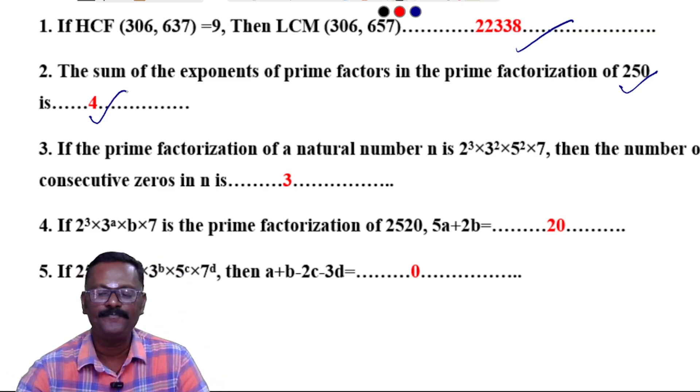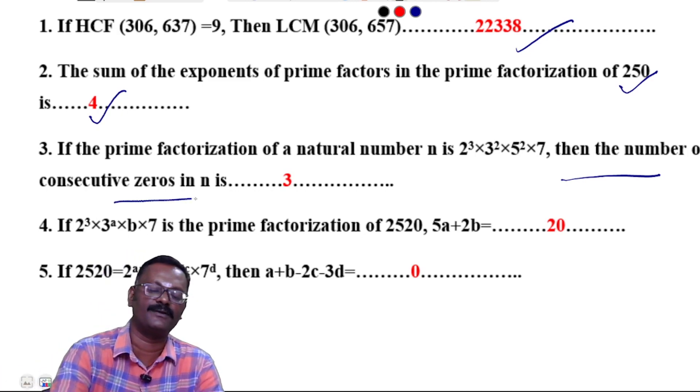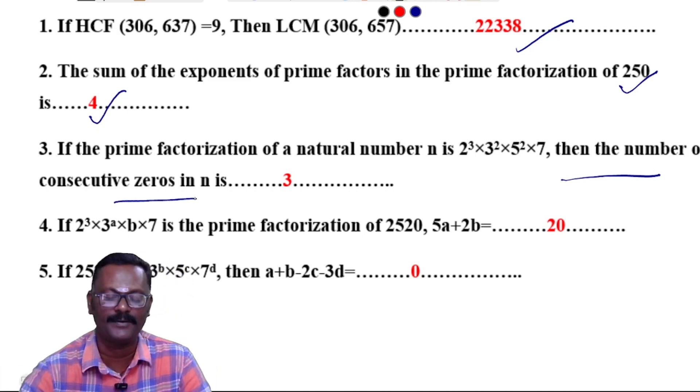Question 3: If the prime factorization of a natural number is 2³ × 3² × 5² × 7, then the number of consecutive zeros - the answer is 3.